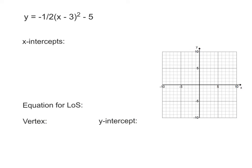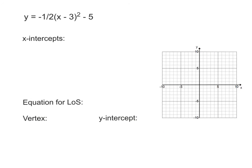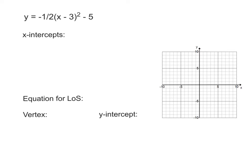Now let's do one more example and talk about what happens if we're in vertex form. Our x-intercepts are found by setting y equal to 0 — there might be two, one, or none. We're going to put 0 in for y and keep our solving skills sharp by solving this.